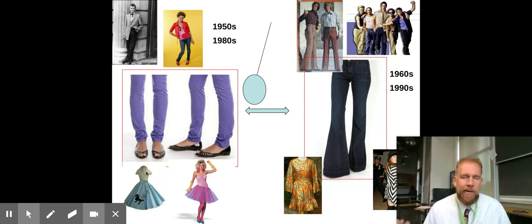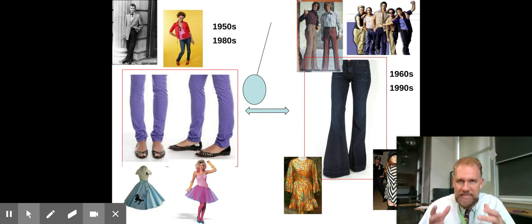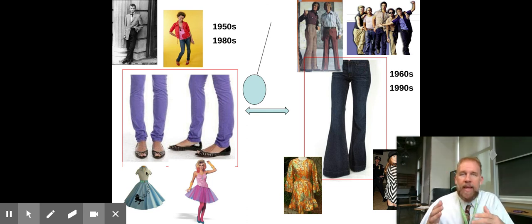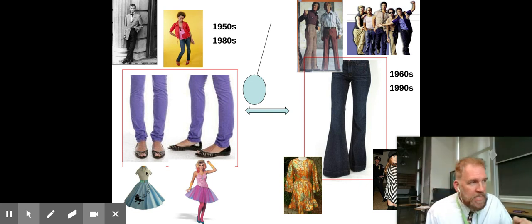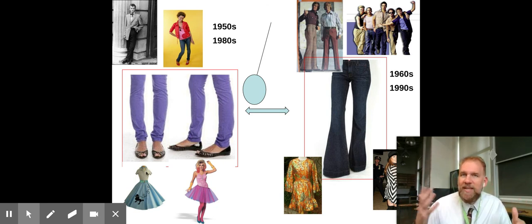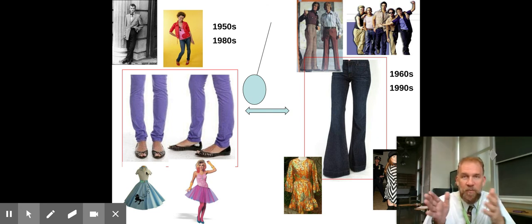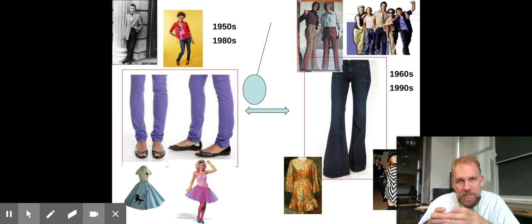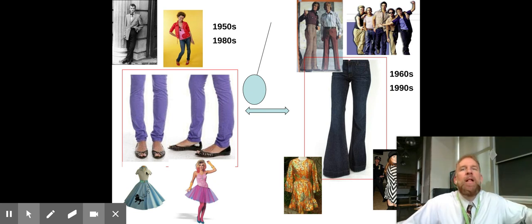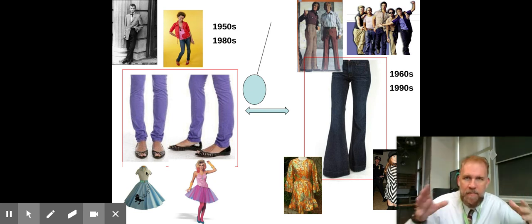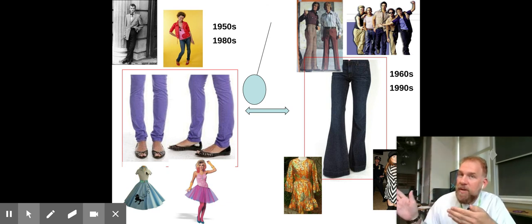In the 1950s, the pants people wore were very slim-fitted pants, cuffed at the bottom and tapered in the leg. Then the 50s swings into the 60s, which is marked by a much more restless period. The pants go from very slim-fitted, tight jeans to big bell-bottom or flared pants — a rebellion and reaction against the period that came before it.